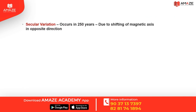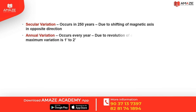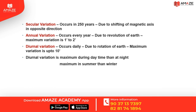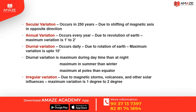Magnetic declination variations: secular variation occurs over about 250 years with the magnetic axis shifting in the opposite direction. Annual variation occurs every year due to the revolution of earth, with maximum variation of 1 to 2 minutes. Diurnal variation occurs daily due to rotation of earth, with maximum variation up to 10 minutes; it is maximum during the day than night, maximum in summer than winter, and maximum at the poles than equator. Irregular variations occur due to magnetic storms, volcanoes, and other solar influences, with maximum variation of 1 to 2 degrees. True bearing equals magnetic bearing plus or minus declination.